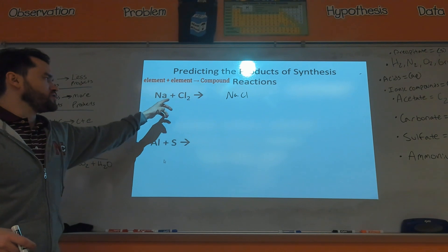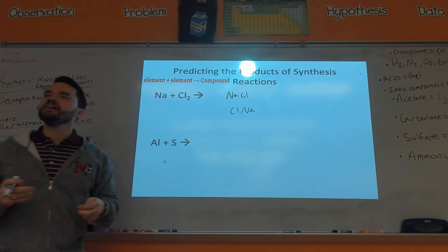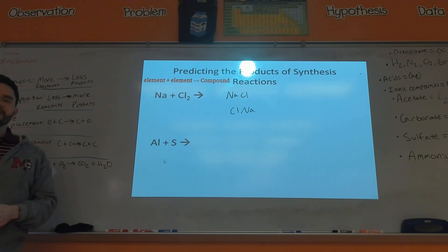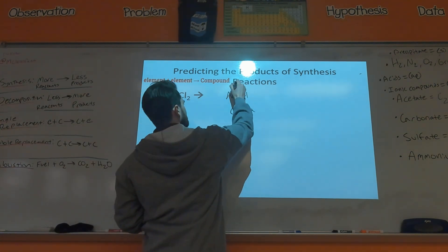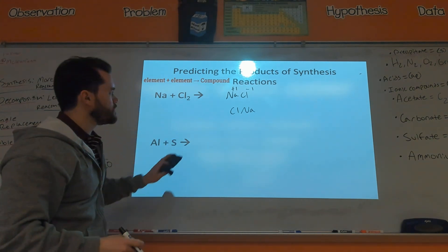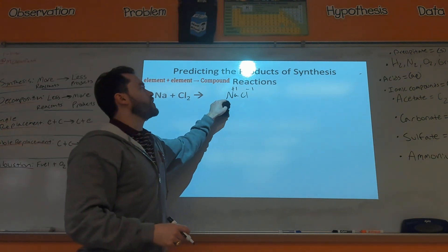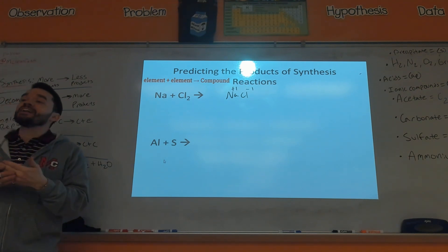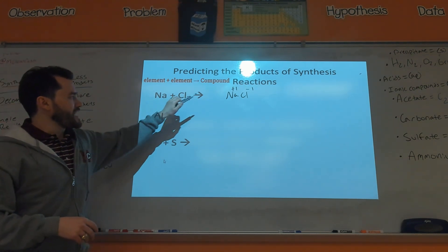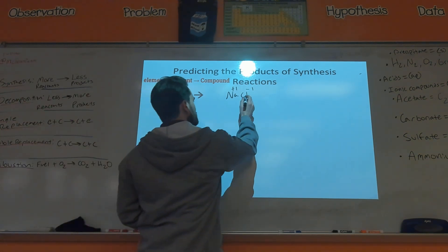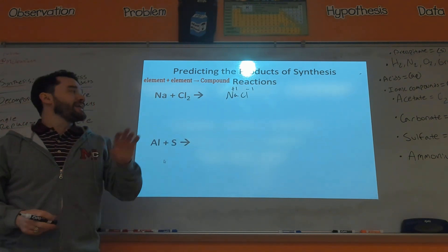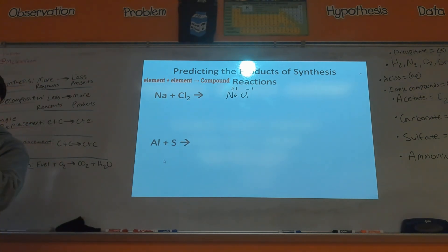You might write ClNa, but the issue with that is convention says you always write the cation — the positive one — first. Sodium has a plus one charge, chlorine is the anion with minus one. Also note it's NaCl, not NaCl₂, because you only need one minus one to cancel out the plus one of sodium. If you see two elements by themselves, it has to be a synthesis reaction — those two elements combine to make the compound.